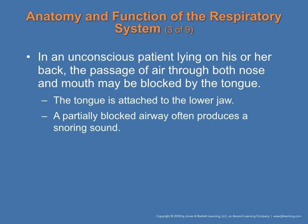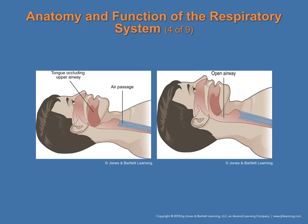In an unconscious patient lying on their back, the passage of air through both nose and mouth may be blocked by the tongue. As you lay back, gravity brings the tongue down and you can see how it blocks the airway. Air trying to come through cannot pass into the lower airway. Other things that can block the airway include vomiting — fluid and food backing up so air cannot pass to the trachea.